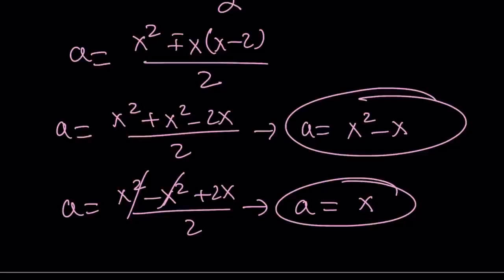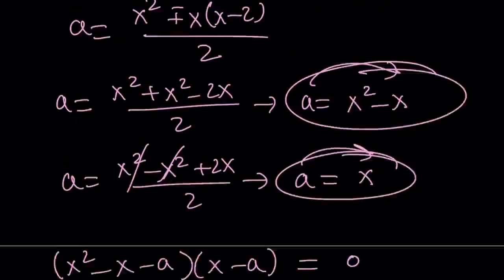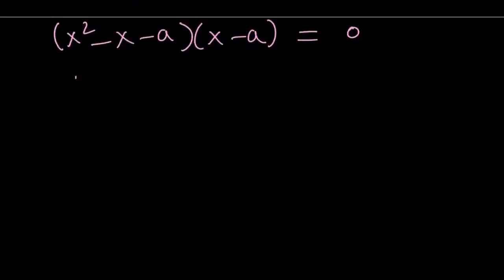So those are the two solutions but this allows us to write the factors of this equation in terms of x. We can put the A here and here and write this as x squared minus x minus A multiply by x minus A. And since this product is equal to 0, we can set it equal to 0. Now, remember A is equal to square root of 3. So we can go ahead and back substitute.